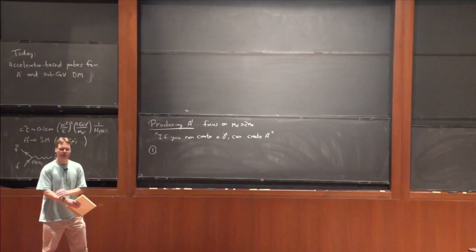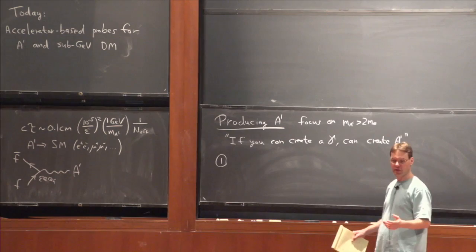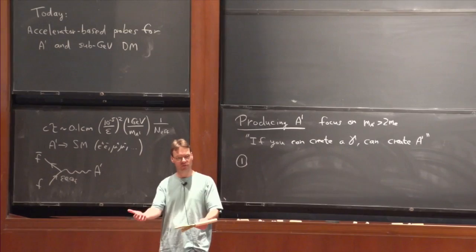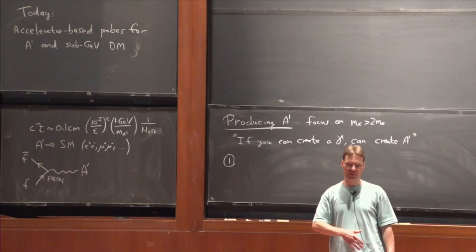Hi everyone. So we talked about sub-GeV dark sectors yesterday, motivating them and why they might be interesting to look at. What I want to do today is discuss how we can look for them. We wrote down a very simple dark sector yesterday, just with a dark photon and some dark matter in it. Today we're going to see how we can look for the simplest thing — just the dark photon itself — how we can produce it, how it would show up in a detector, and then we're going to add dark matter to it, allowing the dark photon to decay to dark matter, and see what kind of search strategies exist.